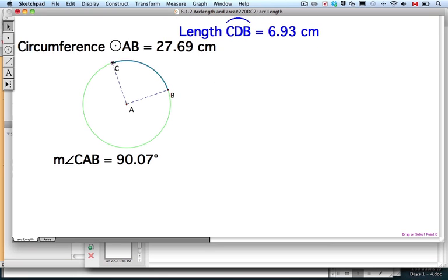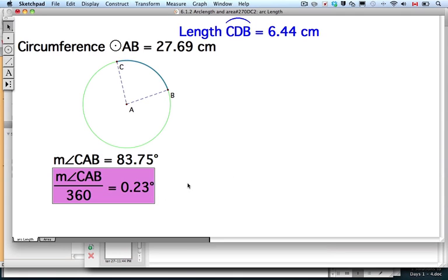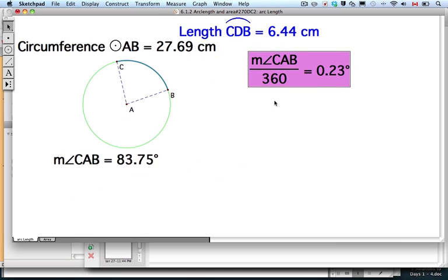So if I move that, the angle changes CAB, as does that blue length, CAB. Okay, so this angle now, CAB, is 83.75. I know the whole circle has a measurement of 360. And I'm going to do a quick calculation here. I'm going to calculate the angle, the central angle, CAB, and I'm going to divide it by 360. So we compared part of the degrees of the circle to the whole circle. All right, part to the whole.